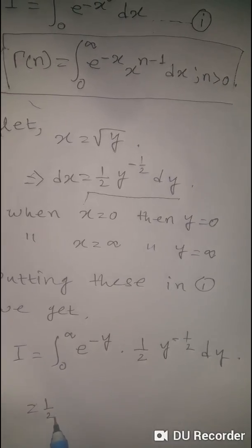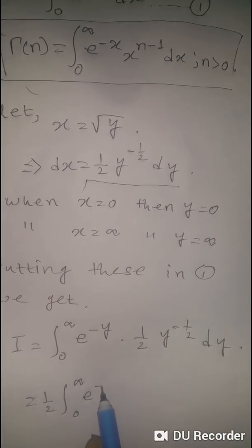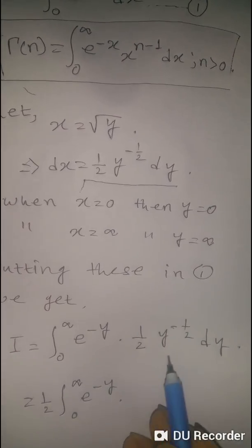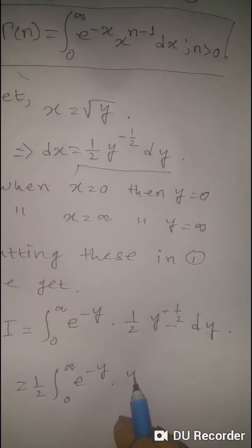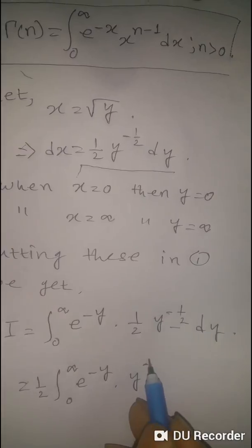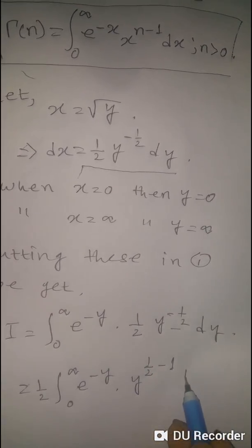Taking half as a constant, we have e to the power negative y times y to the power negative half. We can write y to the power negative half as y to the power half minus 1.